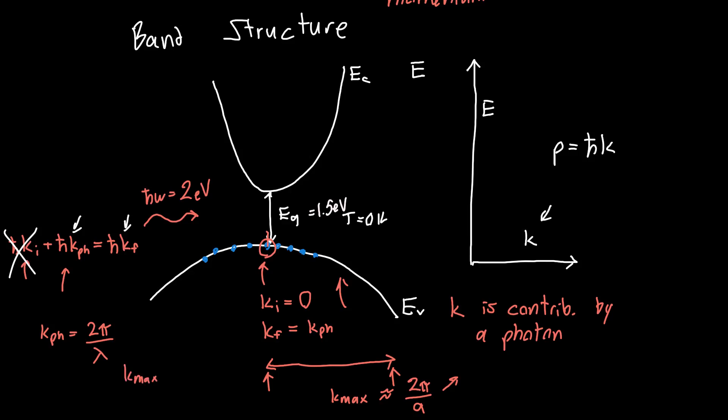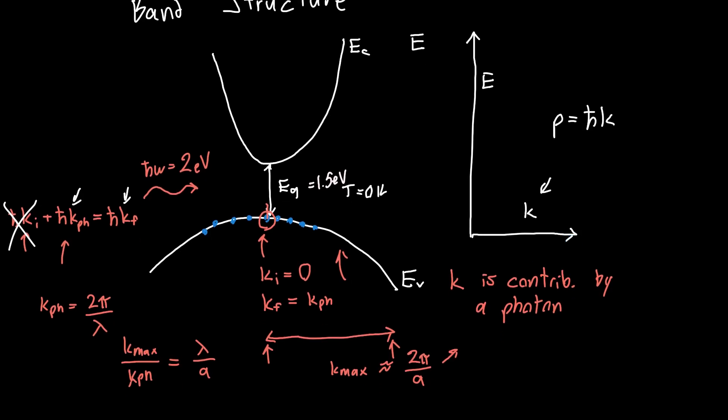So the maximum momentum in this band diagram divided by the photon momentum, if you work out the math, that's just λ over a, or the wavelength of incoming light divided by the crystal lattice spacing. And a is usually on the order of a fraction of a nanometer. λ for most semiconductors that we'll deal with is on the order of 500 nanometers or more. And so this ratio λ over a is huge - much much greater than one, and usually it's going to be in the ballpark of a thousand.